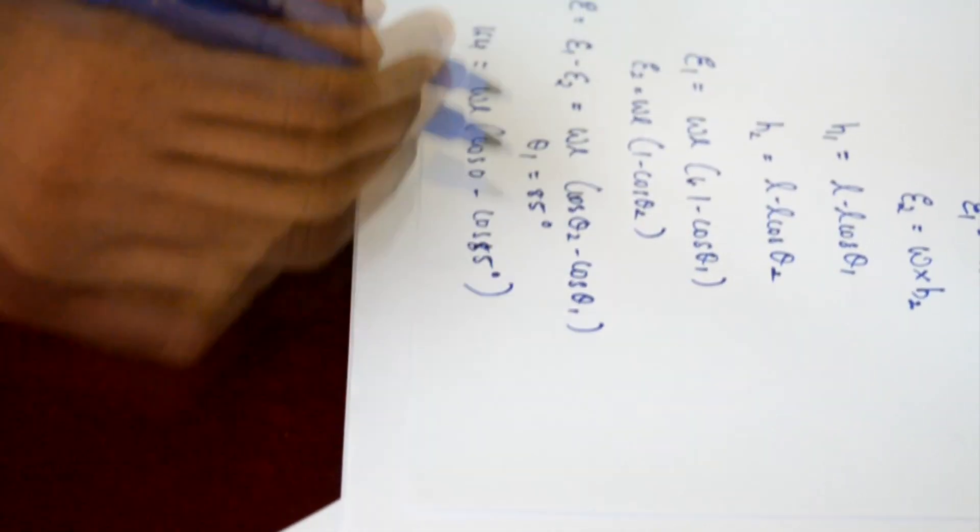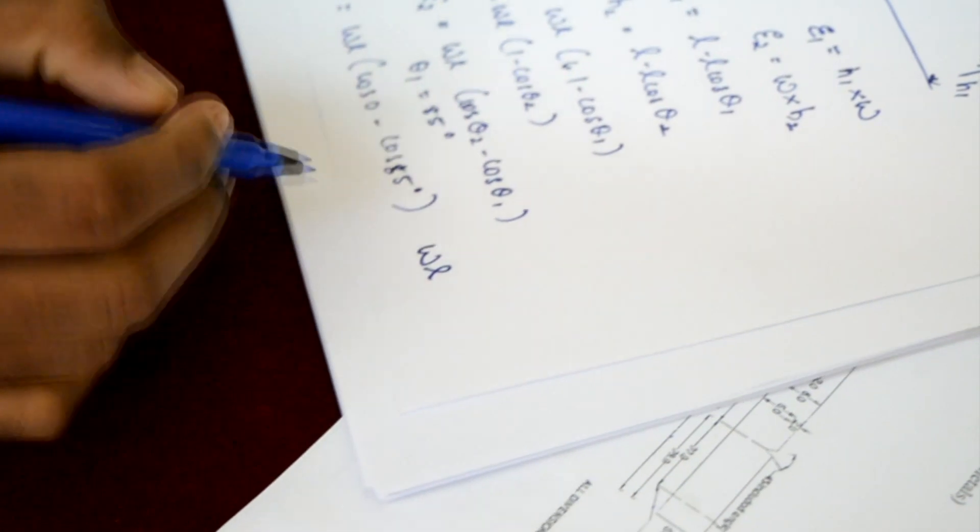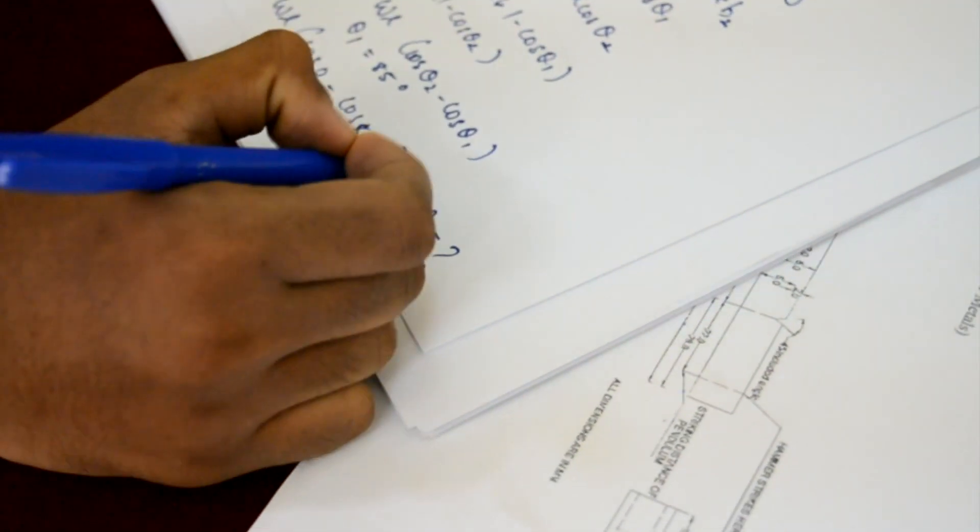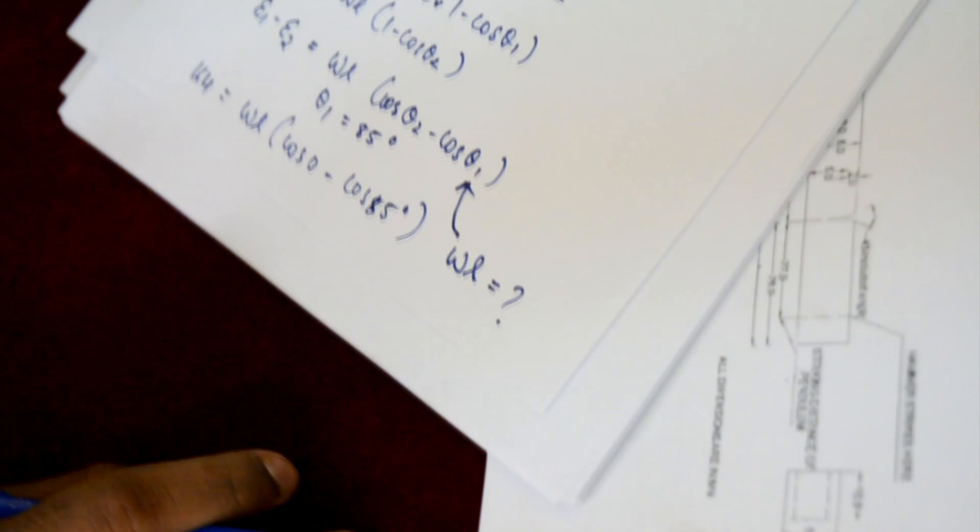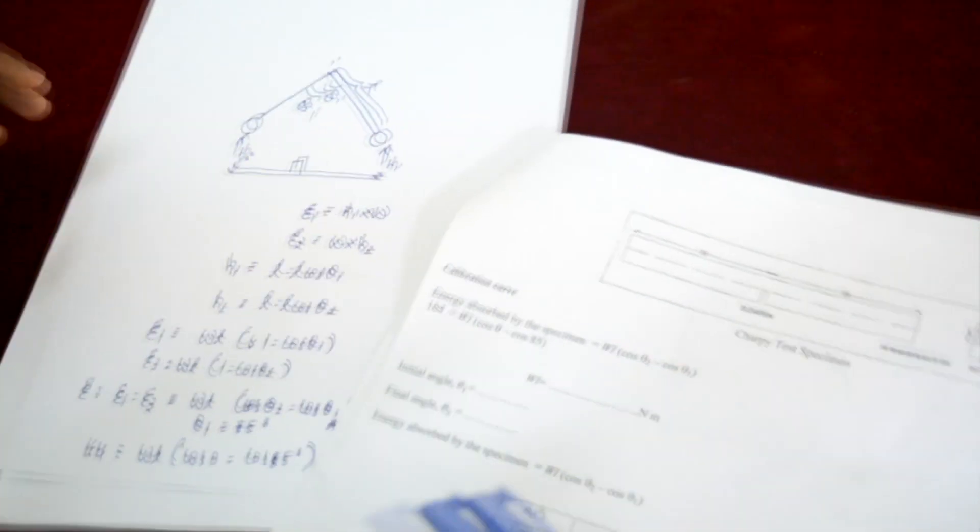From this, WL can be found. This WL is substituted in the initial equation for finding the energy absorbed by the specimen, and from that equation, the various energy absorbed for different angles θ2 can be found.